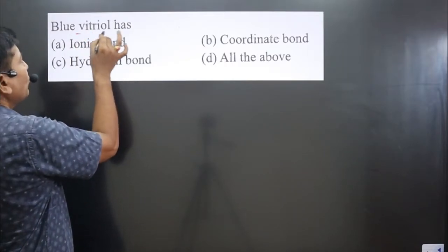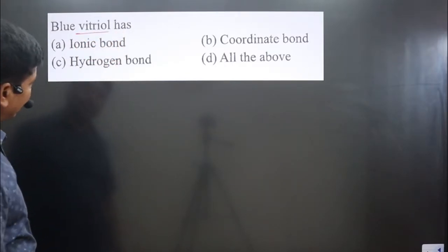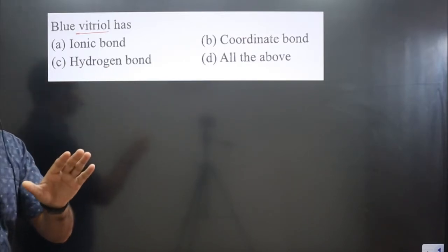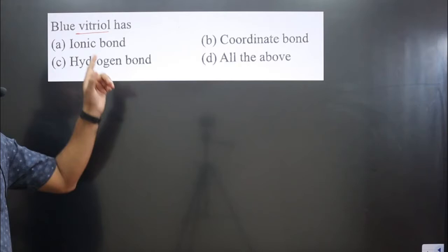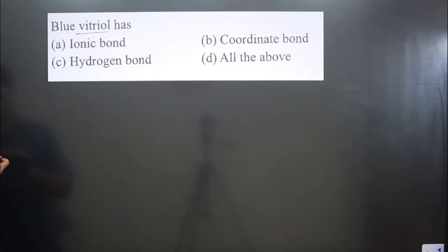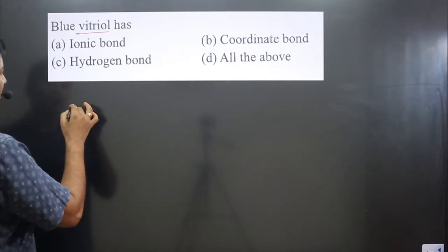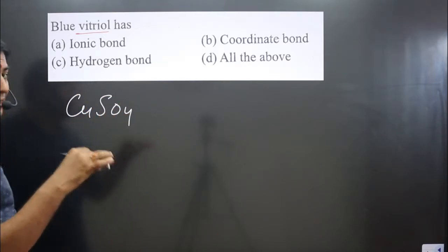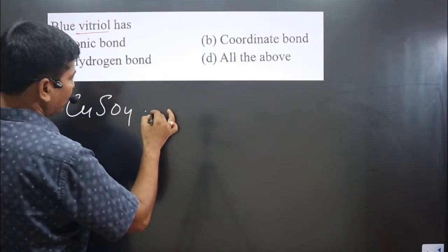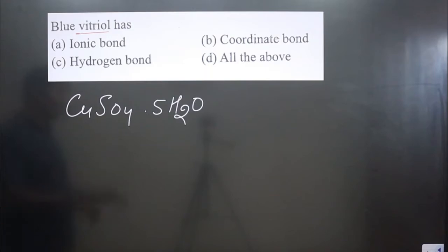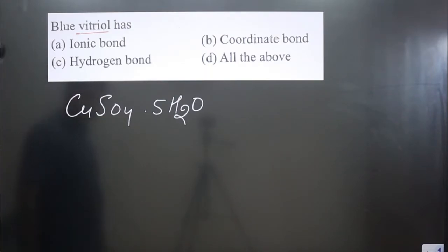The question says blue vitriol has ionic bond, coordinate bond, and hydrogen bond — we need to identify the type of bond. We can identify the type of bond only when we know the chemical formula. The chemical formula for blue vitriol is hydrated copper sulfate: CuSO₄·5H₂O — five water molecules attached to copper sulfate. Now we can draw the structure to identify the type of bond.